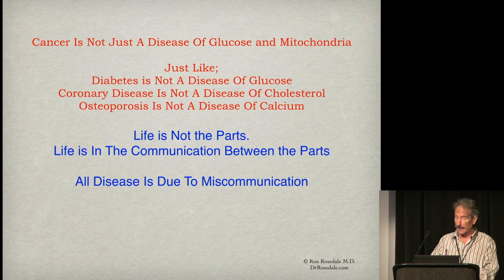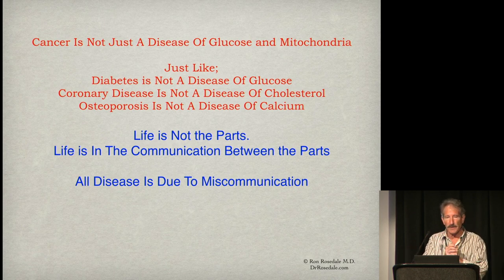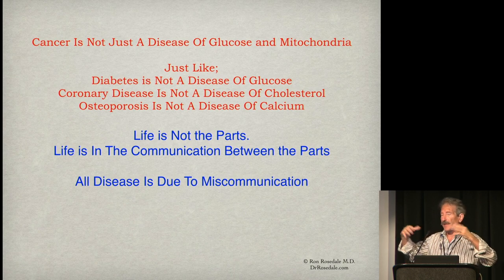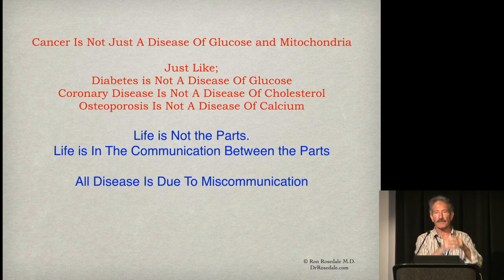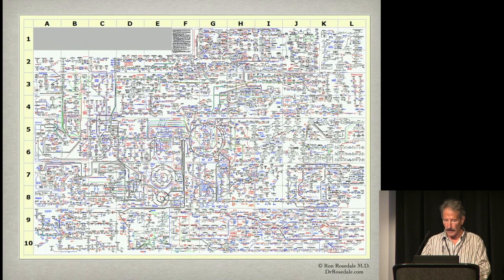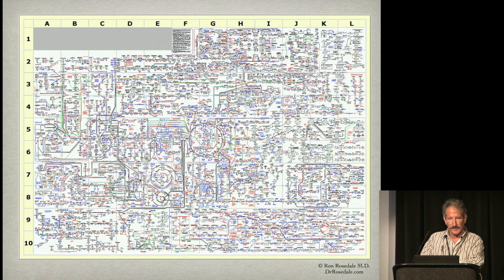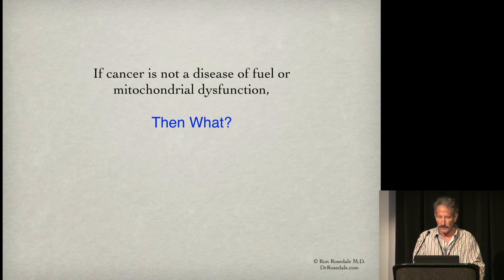If cancer is not a disease of glucose and mitochondria — just as diabetes is not a disease of glucose, coronary disease is not a disease of cholesterol, osteoporosis is not a disease of calcium — it's because life isn't in the parts. Life is in the interaction and communication of the parts. All disease, like life, is due to communication or miscommunication. If there are defective mitochondria, why are they accumulating? Where's the communication that allows mitophagy — the gobbling up of defective mitochondria? Everything is going to be in some sort of defective communication that otherwise would preserve life and health.